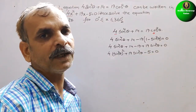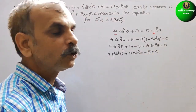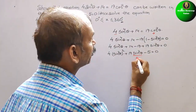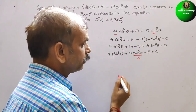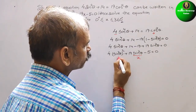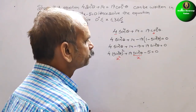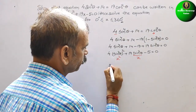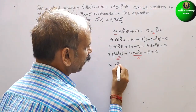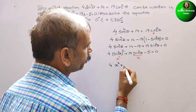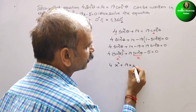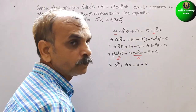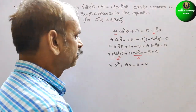14 minus 19 is minus 5. So now arrange it: 4sin²θ whole square + 19sin²θ − 5 = 0. Now we will take sin²θ as x, and this will become x². So your equation becomes 4x² + 19x − 5 = 0. So we have proved that.